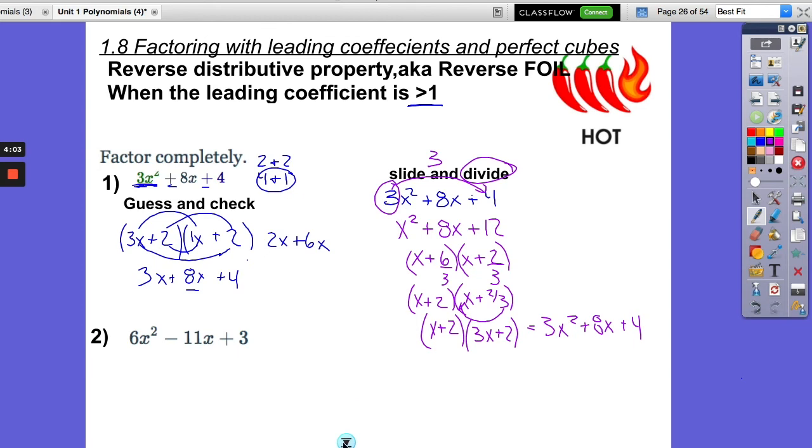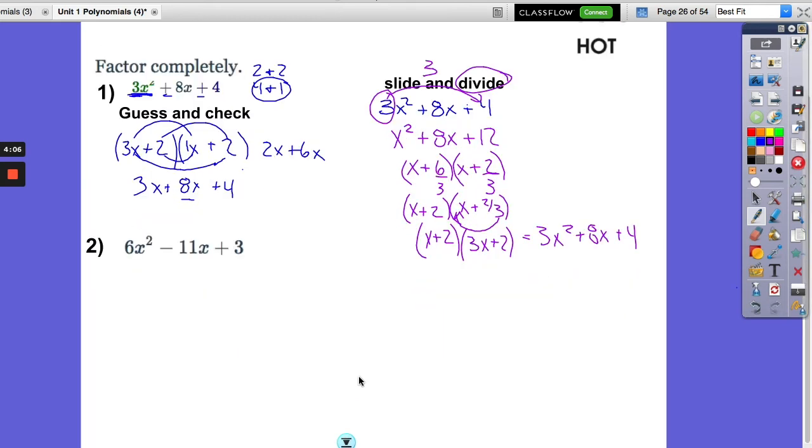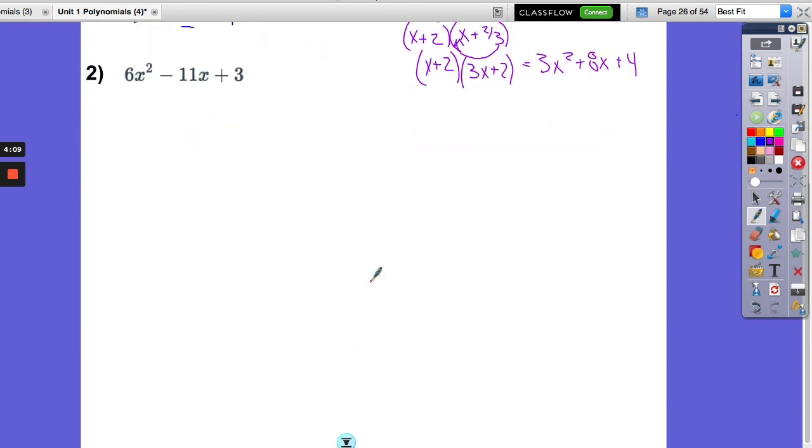So it worked out. Now, number 2 is one that I would definitely want to do slide and divide on. And the reason is that there's a lot of different possibilities for the 6. We would have 6 in 1 and 3 in 2, and it might be a little bit tougher for us. So let's just do this one with slide and divide. We're going to take the 6 and multiply it out there. And we're going to get x squared minus 11x plus 18. So now we need to figure out what multiplies to be 18 and adds to be negative 11. We're going to practice this a lot. So let's go with x minus 9 and x minus 2. I think that works out. Yes, it does.